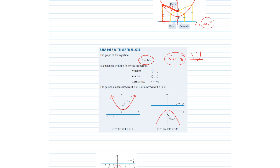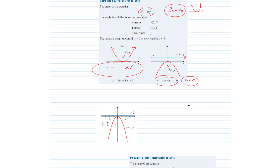For the parabola x² = 4py, the vertex is at the origin and the directrix is the line y = -p. On the other hand, when p is a negative number, the parabola opens downward. The focus is at point (0, p) and the directrix is at y = -p.